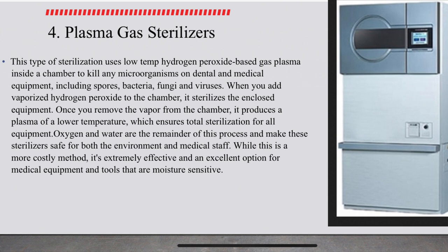Plasma gas sterilization uses low-temperature hydrogen peroxide-based gas plasma inside a chamber to kill microorganisms on dental or medical equipment, including spores, bacteria, fungi, and viruses. When vaporized hydrogen peroxide is added to a chamber, it sterilizes the enclosed equipment. Once the vapor is removed from the chamber, it produces a plasma of lower temperature, which ensures total sterilization. Oxygen and water are the byproducts of this process, making this sterilization safe for the surrounding environment and medical staff. While it is a more costly method, it is extremely effective and an excellent option for the most sensitive medical equipment and tools.